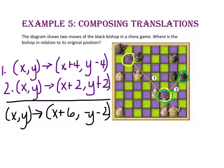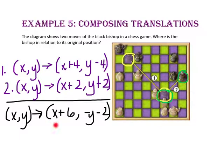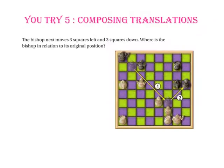We can check this by counting from our original position to our final position. We've moved 6 units to the right and 2 units down: X plus 6, Y minus 2.